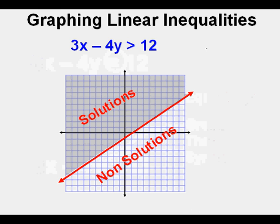In an equation, we are solving for a line, but in an inequality, we are solving for a boundary line, because the line we graph is a boundary. On one side of the line is the solutions, and on the other side there are no solutions. We need to find the equation of the boundary line, draw a dashed or solid line for it, and finally shade on one side to represent the solution set.